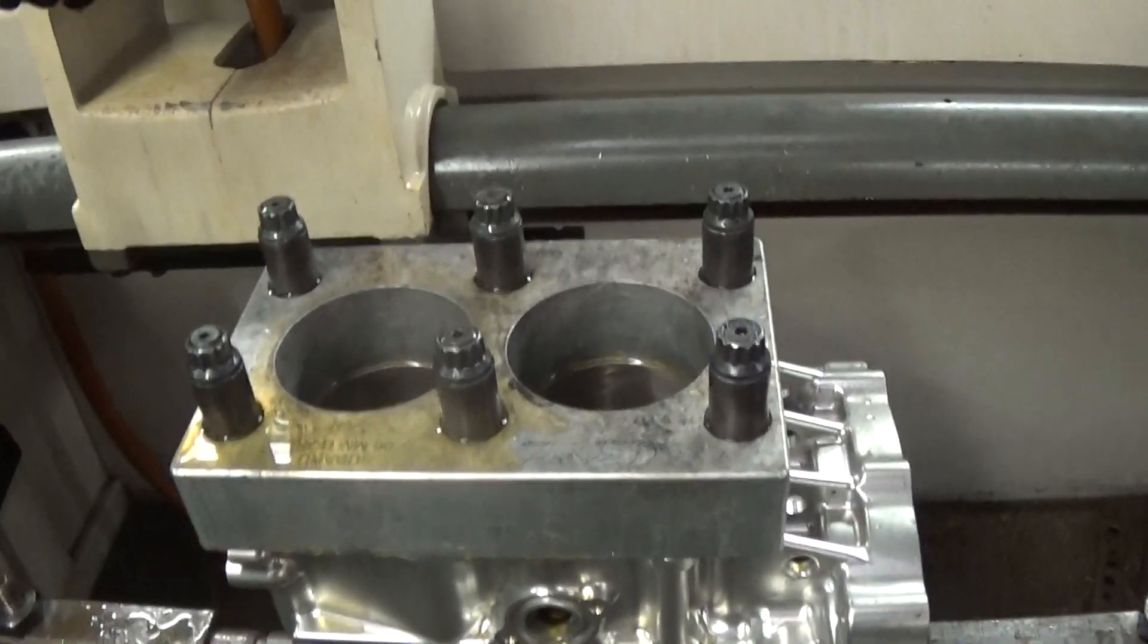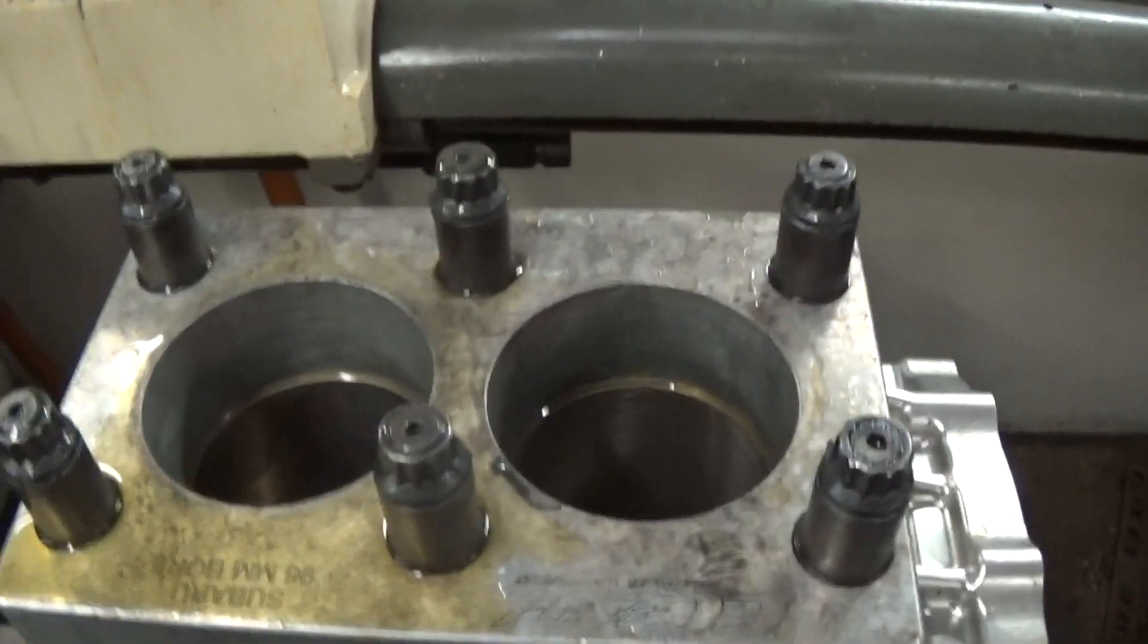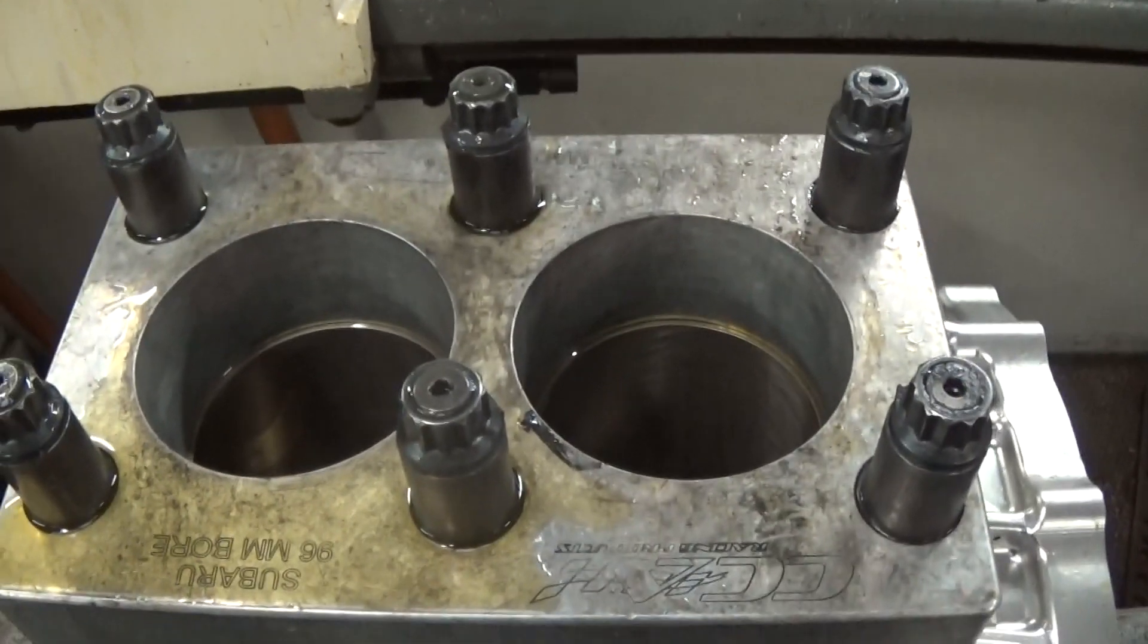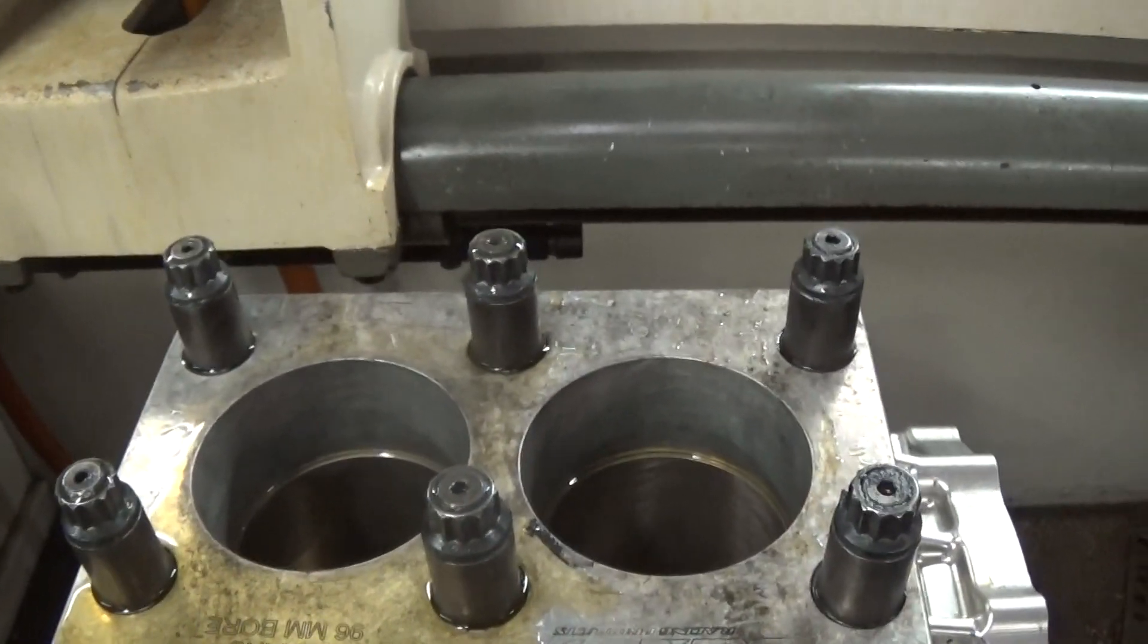I've got a block in the hone here with nickel-sil cylinders. They come 0.004 inches small from finished size, so they have to be installed and then finish honed. I want to show you what kind of results you can get with this SV10.